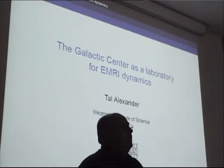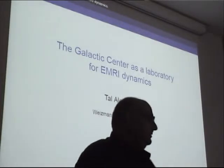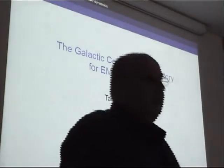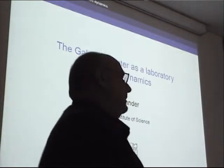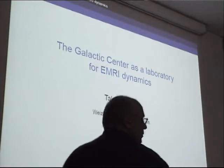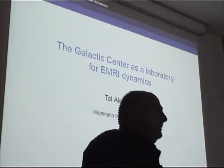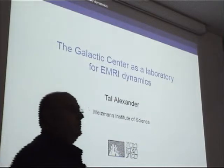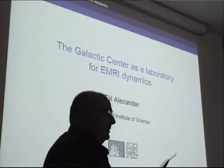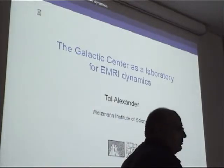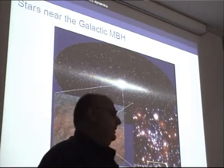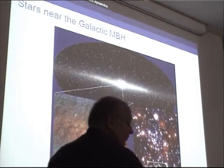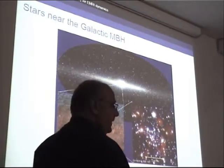I'd like to talk about the potential and the actual use of the galactic center as a place to learn about how EMRI dynamics work. The implicit assumption here is that most LISA targets will look roughly like the galactic center in the sense that they will have low-mass black holes associated with relaxed high-density cusps. The galactic center itself is not going to be a prominent gravitational wave source in itself, excepting perhaps the very low-mass stars that Mark Freitag has studied.